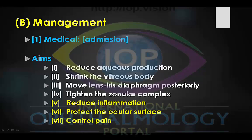I've divided the seven aims into the first four, which are often found within the textbooks, and the final three, which are often not talked about. The first four aims: we want to reduce aqueous production, we need to shrink the vitreous body, we need to move the lens-iris diaphragm posteriorly, and we need to tighten the zonular complex. But these are very inflamed eyes, and we need to take measures to target the severe inflammatory response.